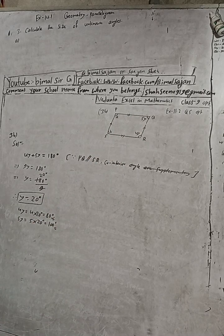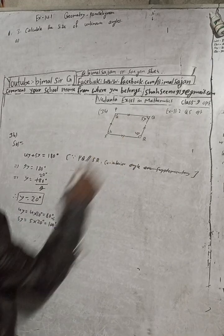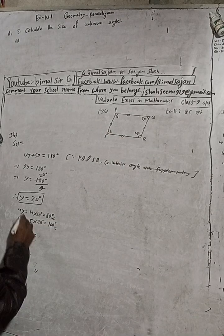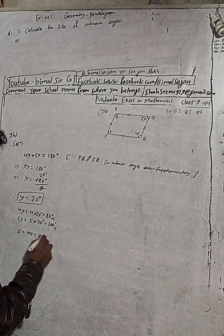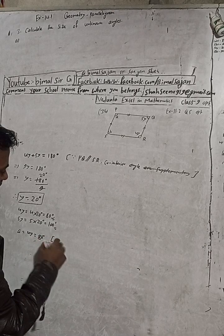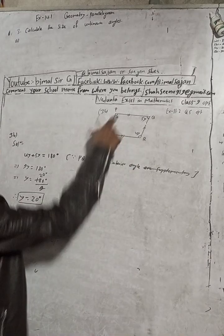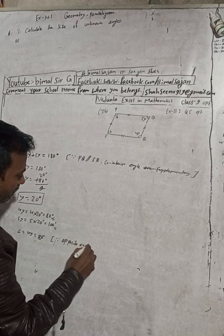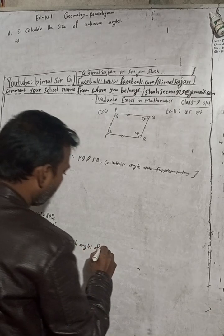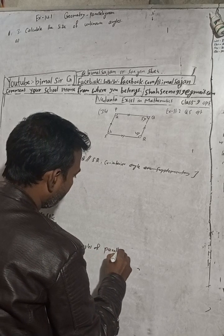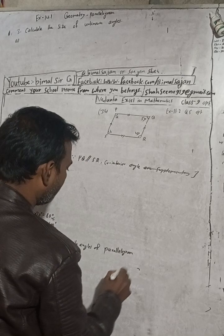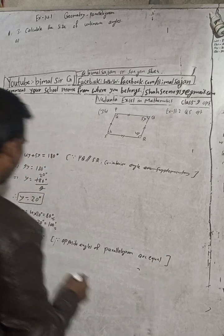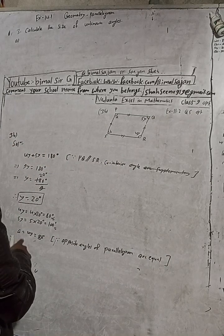Now we can write: A is equal to 4y. The value of 4y is 80 degrees, so A equals 80 degrees. This is because opposite angles of a parallelogram are equal — opposite angles of the parallelogram are equal.